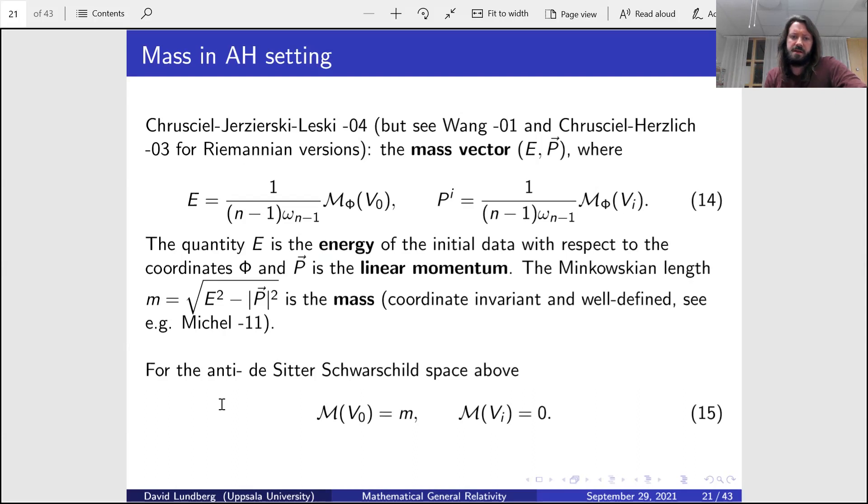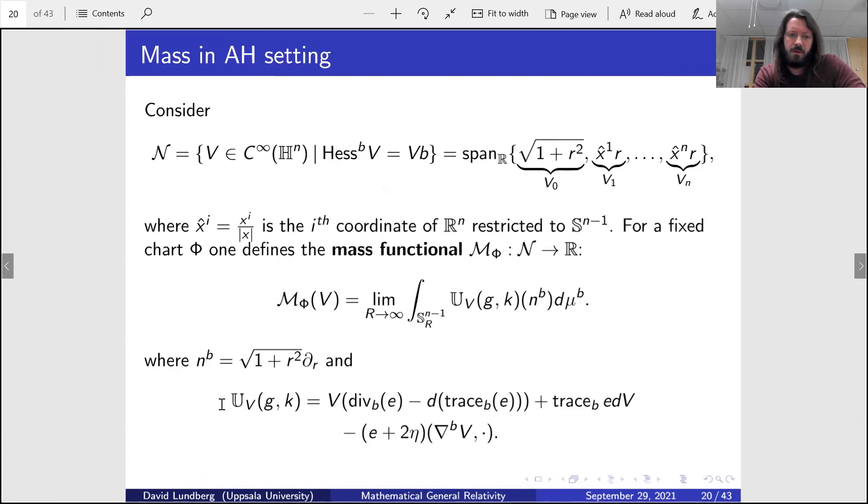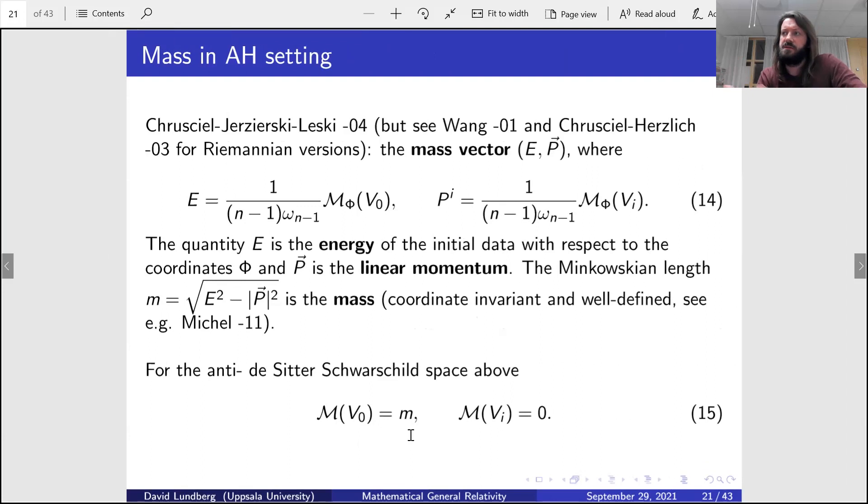In particular, one can choose this isometry so that the linear momentum part here vanishes, meaning that we have only the first component of the mass vector here being non-zero. In that case, one says that the coordinates are balanced. The expression that we had before here, with this, of course eta comes in, which is this difference of the metric and the second fundamental form. So that would be strictly a spacetime version.